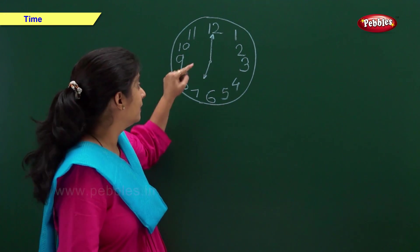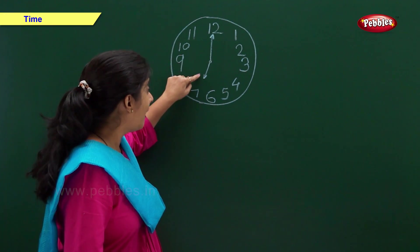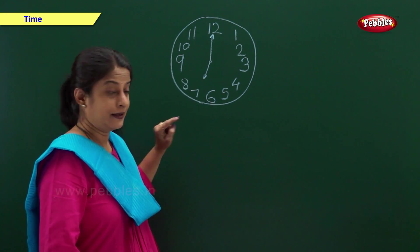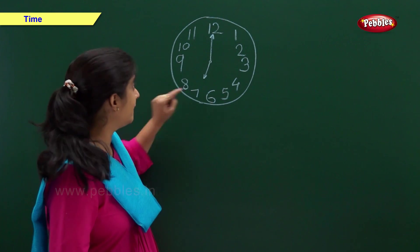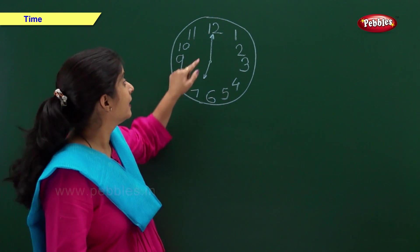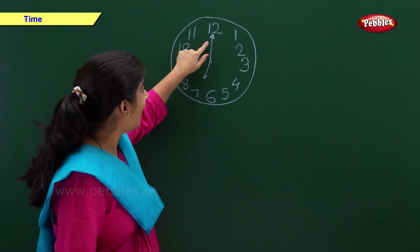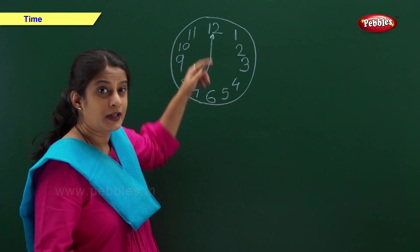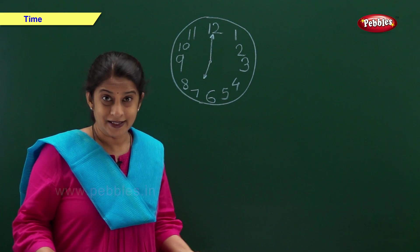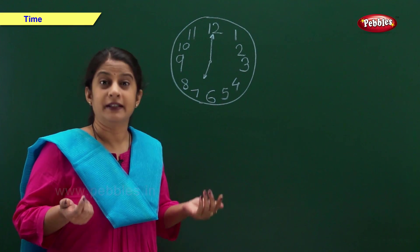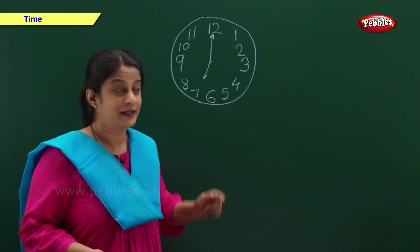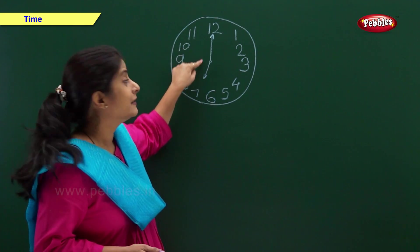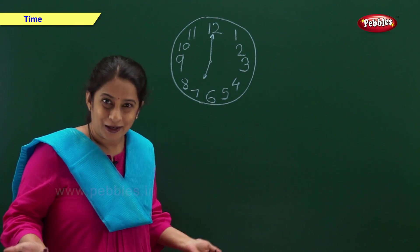In this clock, the hour hand is on 7 and the minute hand is on 12. So, we say the time is 7 o'clock.